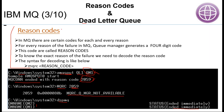So in dead letter queue, everything is based on reason codes only — it is very important to understand reason codes before understanding dead letter queue. In the technical introduction we have already seen some reason codes: 2053 which is queue full, 2016 which is put enabled, and 2051 which is put disabled.